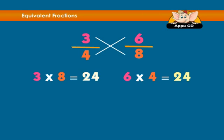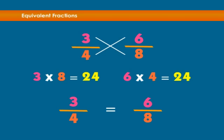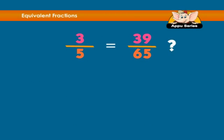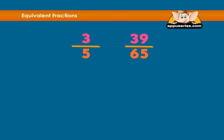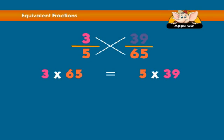Since the cross products are the same, the fractions are equivalent. Let's do one more. Is three-fifths equal to thirty-nine over sixty-five? Let's do our trick called cross multiplication. Three times sixty-five equals five times thirty-nine.